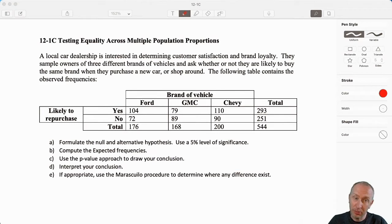So as our third practice problem, I'm going to go through this one a little more quickly just so that you have a better sense of the flow of going through this type of problem without as many breaks. Here we're looking at a local car dealership. They're interested in determining customer satisfaction and brand loyalty.